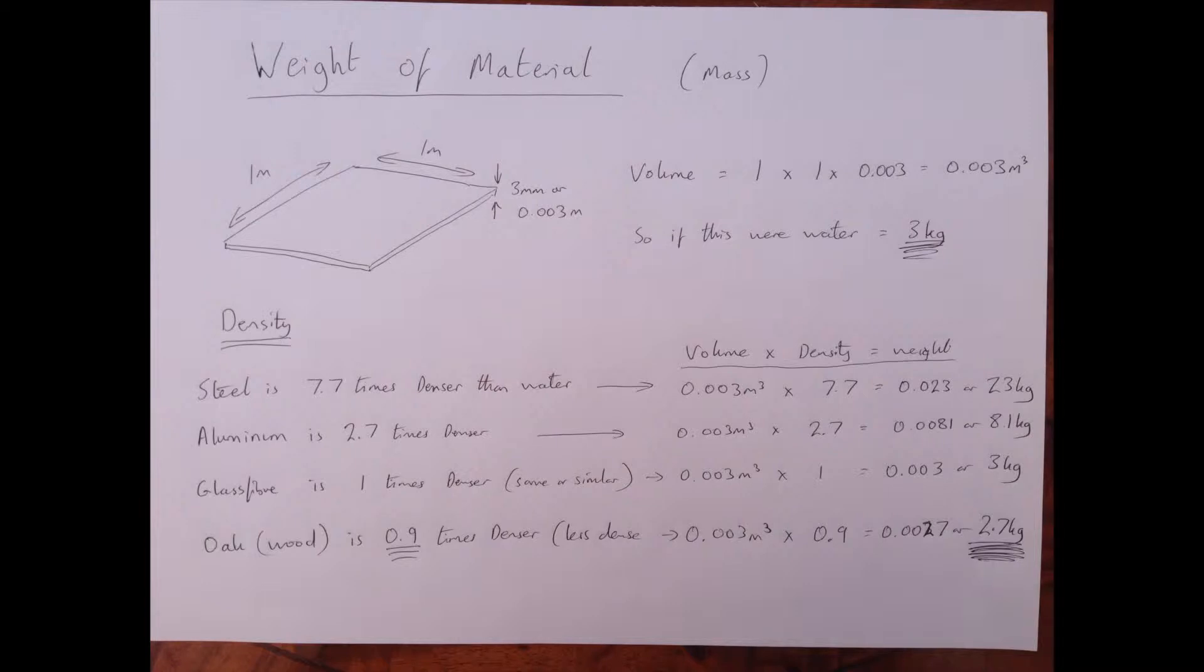Fiberglass is about the same density as water, so it will come out at 3 kilograms, depending on the type of resin you use, the type of various base materials and gel coat and stuff. Oak is less dense than water, so it will come out at 2.7 kilograms. This is why wood floats. If you had that sheet of 1 meter by 1 meter by 3 millimeter veneer of wood and you threw it in the water, it would float and 300 grams of it would be stuck above the water's surface.